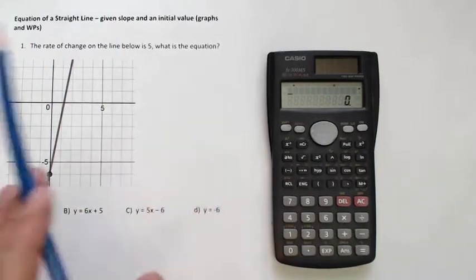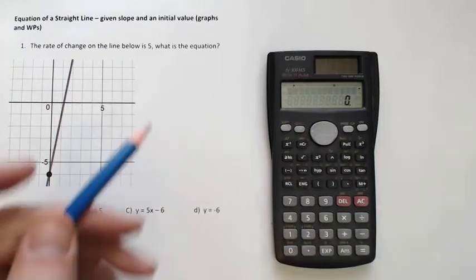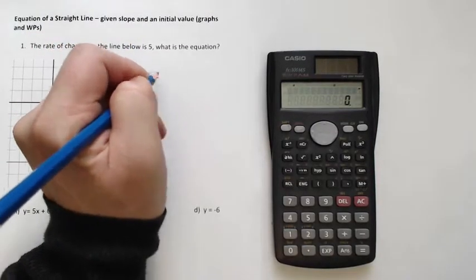The rate of change on the line below is 5. What's the equation? Well, this is like a super easy question as long as you remember this basic rule.